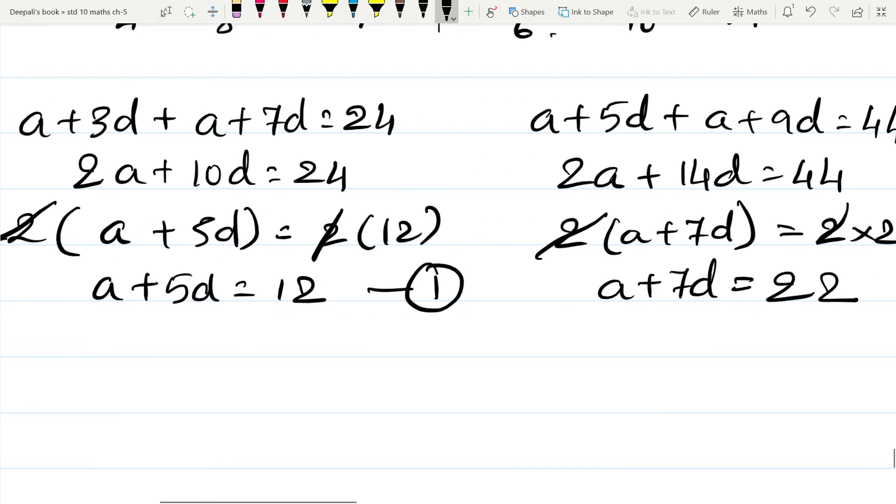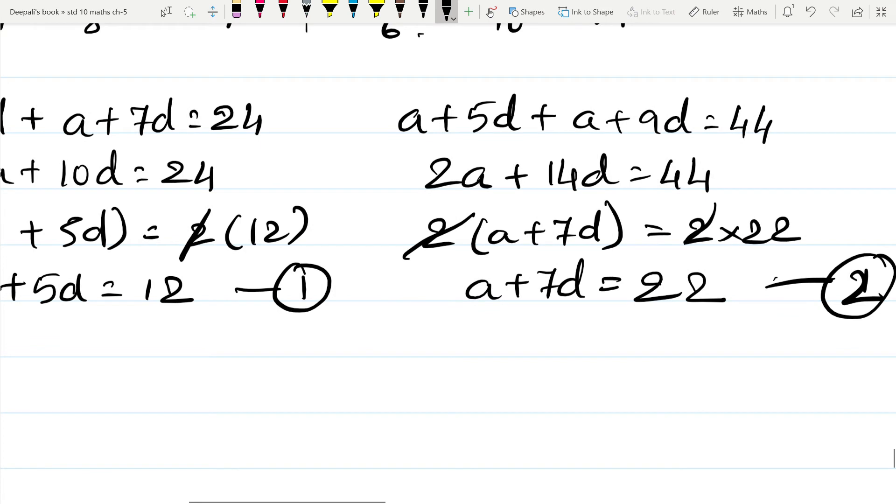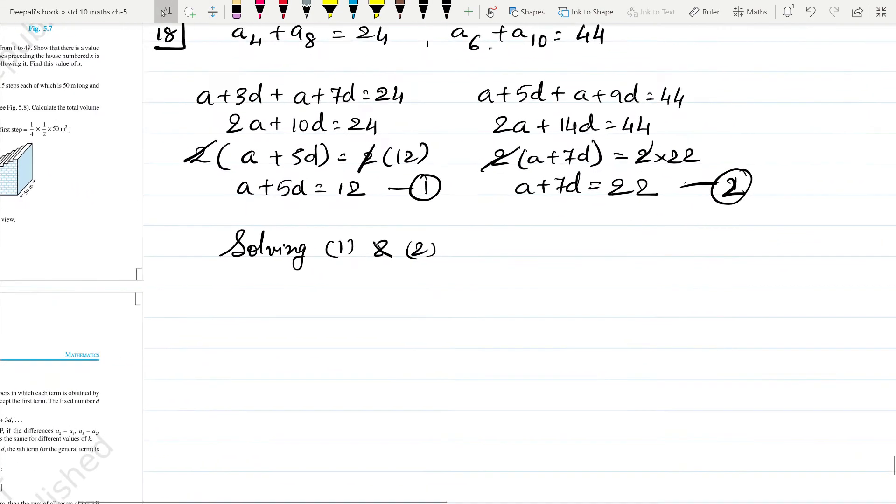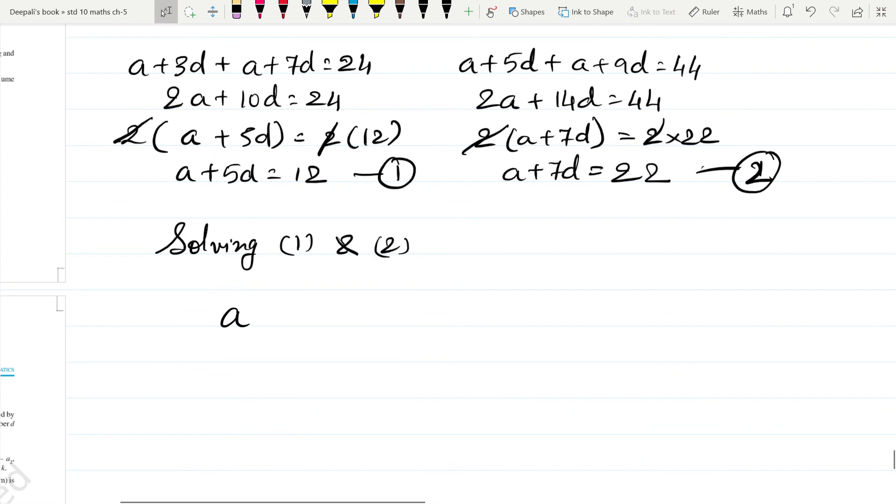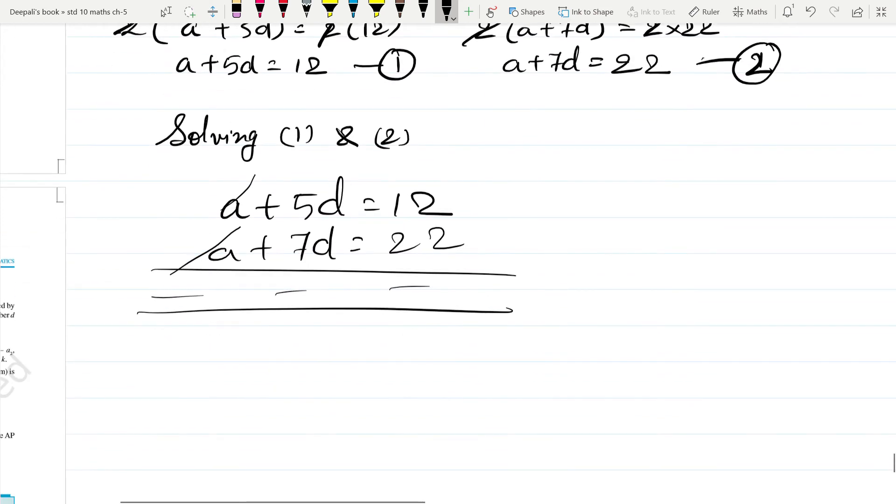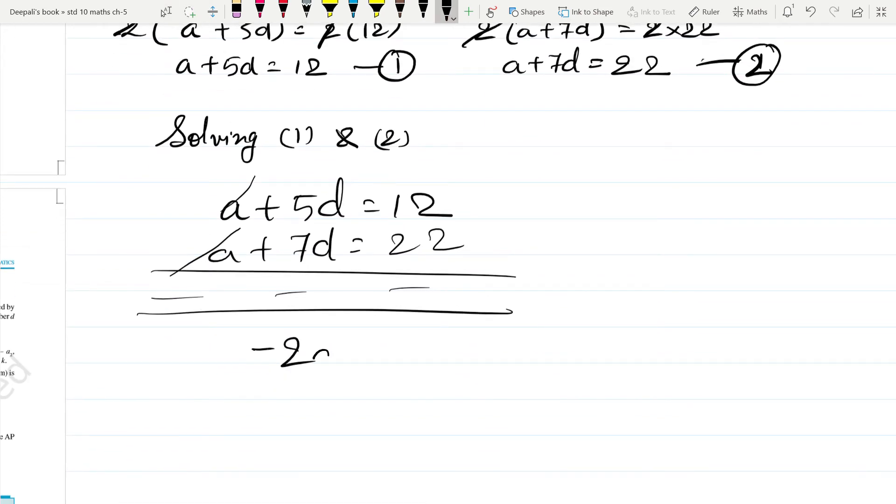Now solving equation 1 and 2 by elimination method, we get A plus 5D is equal to 12, A plus 7D is equal to 22. Subtracting both equations we get minus 2D is equal to minus 10. So D is equal to 5.